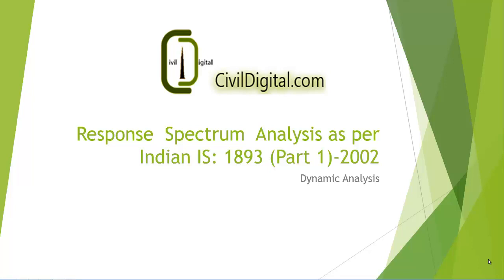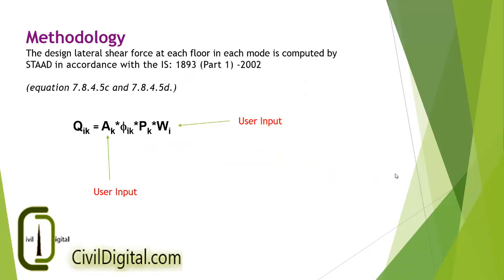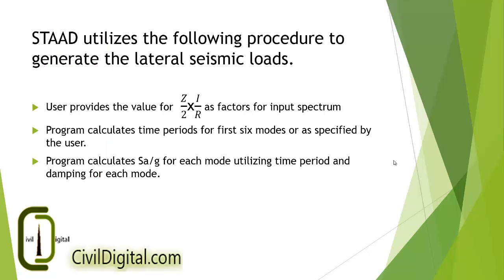The response spectrum analysis is one of the most widely used dynamic analysis procedures to analyze a building. While performing the response spectrum analysis in STAT Pro, the desired lateral force at each floor in each mode is calculated using the equation qIk equals ak into phiik into pk into wi, where the value of ak and wi has to be defined by the user. The phiik and pk values are calculated by STAT. STAT uses the following procedure to generate the lateral seismic loads. We have to specify the value for z/2 into i/r as the factor for input spectrum.